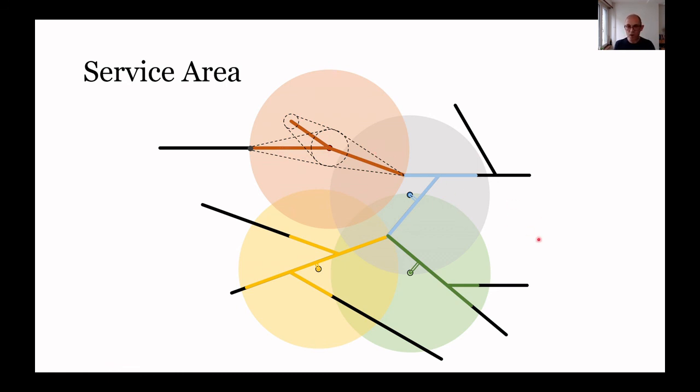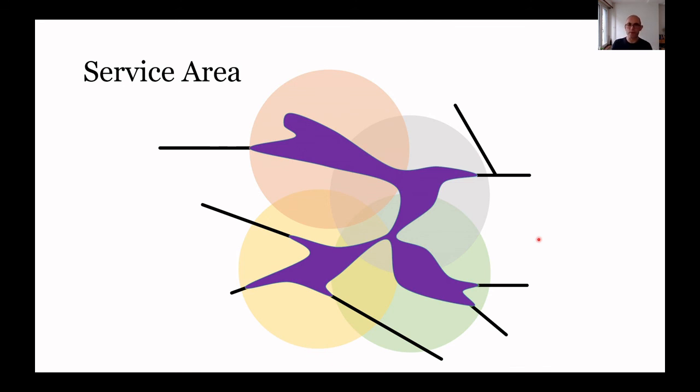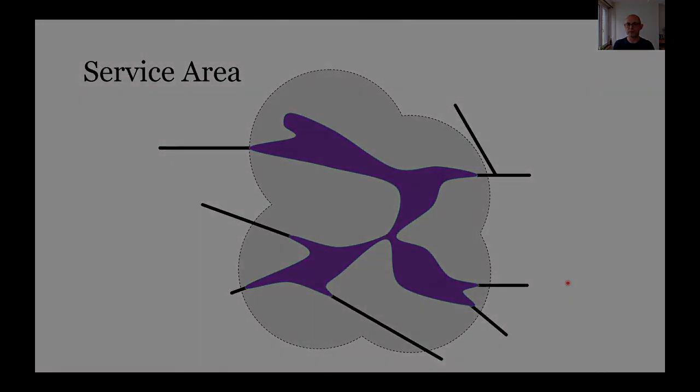If we extend that throughout the whole network, we end up with some shape like this perhaps, where we have our nodes, our starting points, and we can move through the network and then leave the network at certain points. Some distance, much reduced to the distance we can travel along the network, but we can actually leave it. This is our service area. We compare that with our buffered zone around our four nodes and we can see that it is considerably smaller, always smaller than the buffered area, simply because we are constrained to the network. That's the basic concept of the service area.